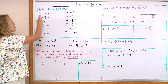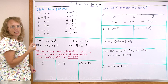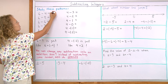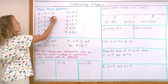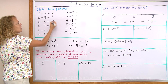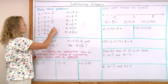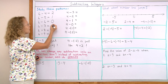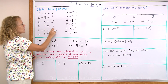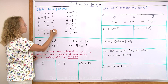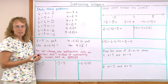First of all, we have here 6 minus, and this number is increasing in each step. So 6 minus 4 is 2, 6 minus 5 is 1, and 6 minus 6 is 0. Now when you look at the pattern in the answers, you can see what the next one has to be. It has to go down by one, so this has to be negative 1, this has to be negative 2, and this has to be negative 3.